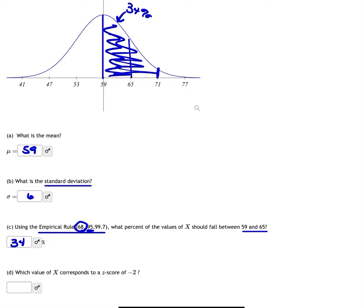Now the last part asks what corresponds to a z-score of negative 2. A z-score is how many standard deviations you are from the mean. If I'm doing negative 2, that means I'm going to the left two standard deviations. Starting at the mean, going to the left two, that would leave me at a value of 47.